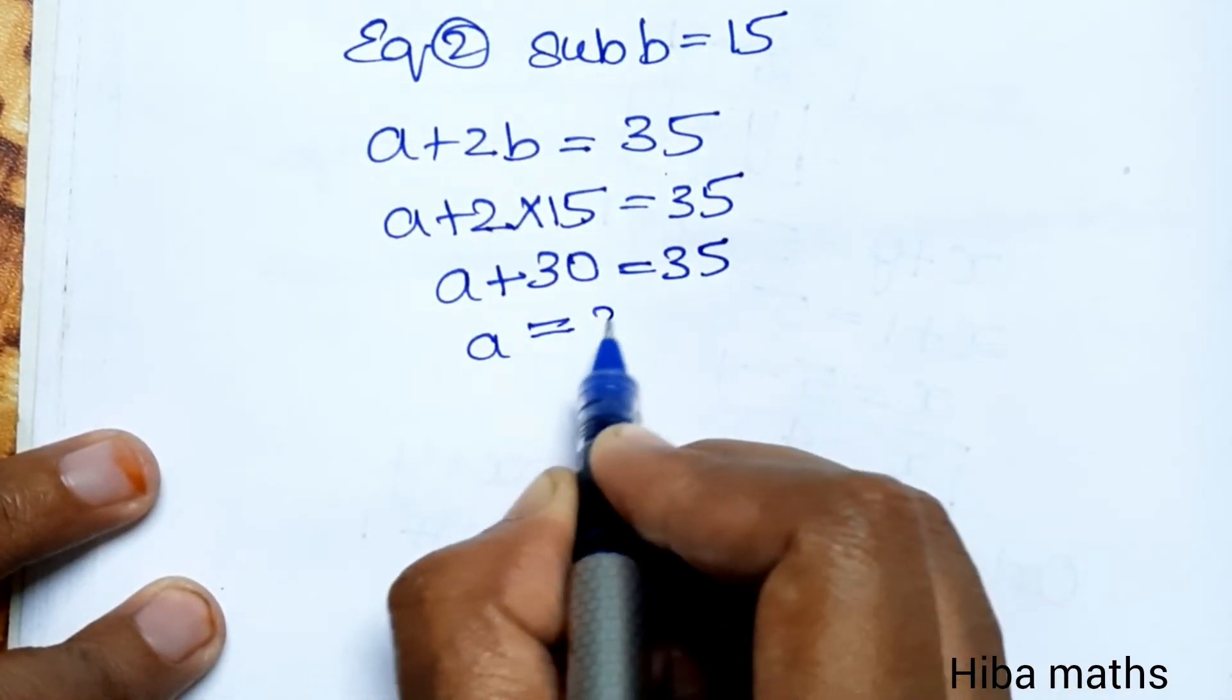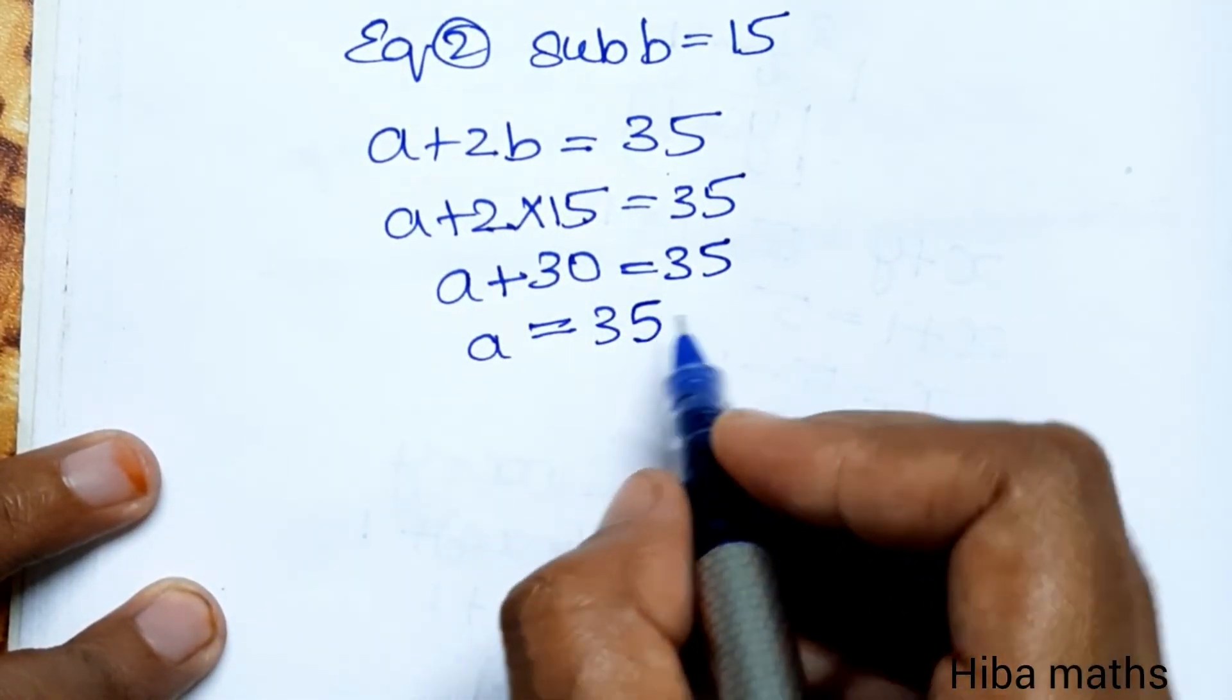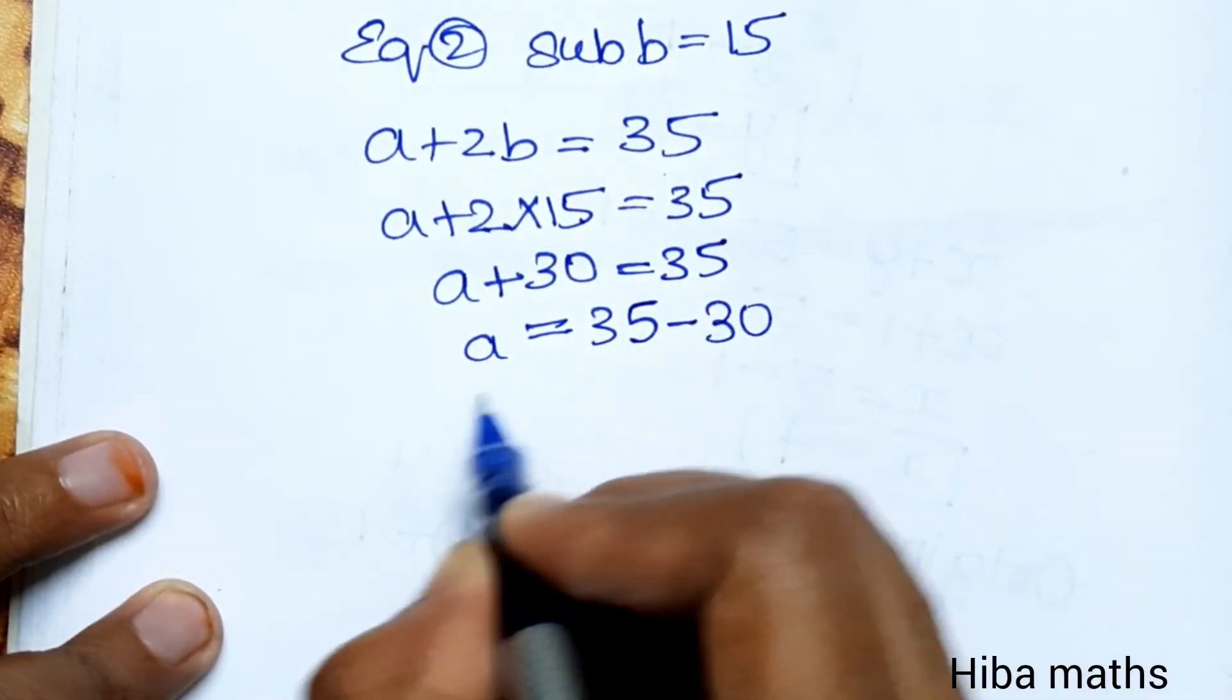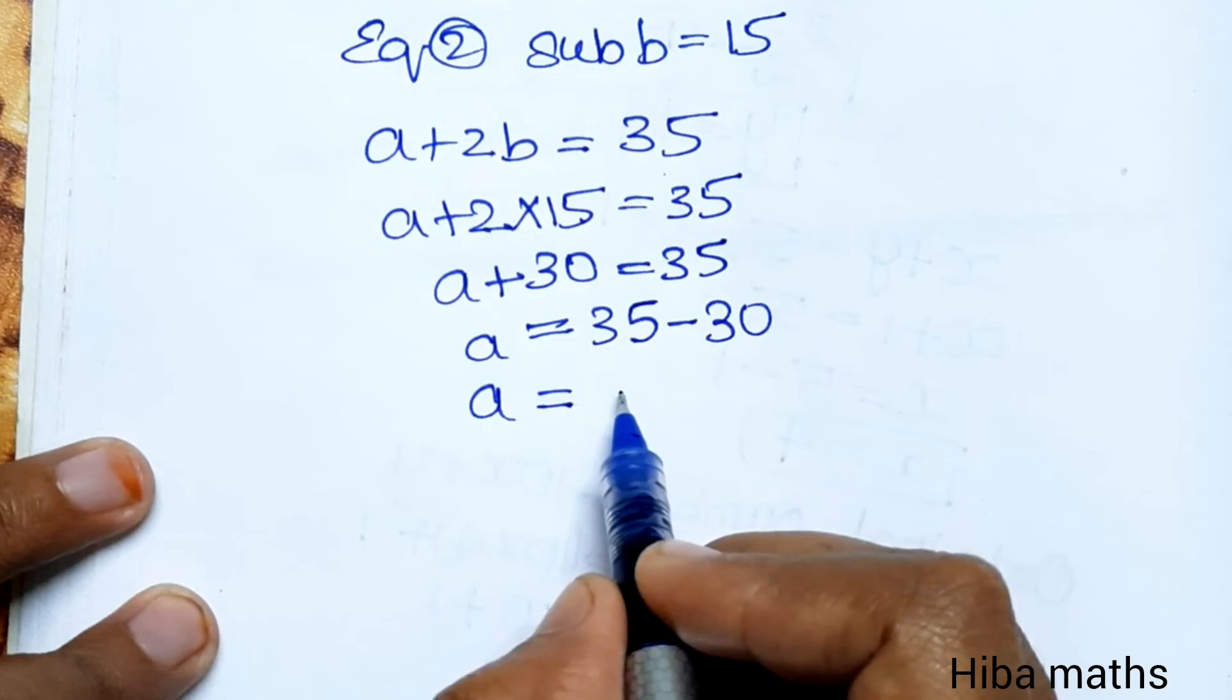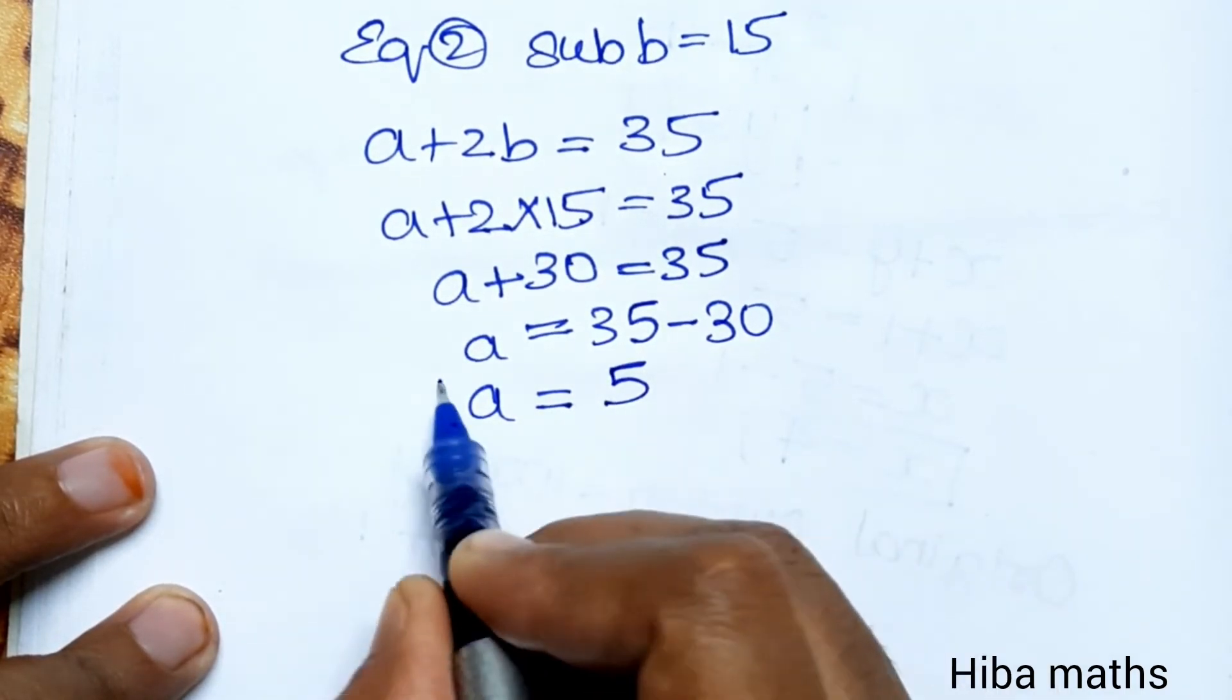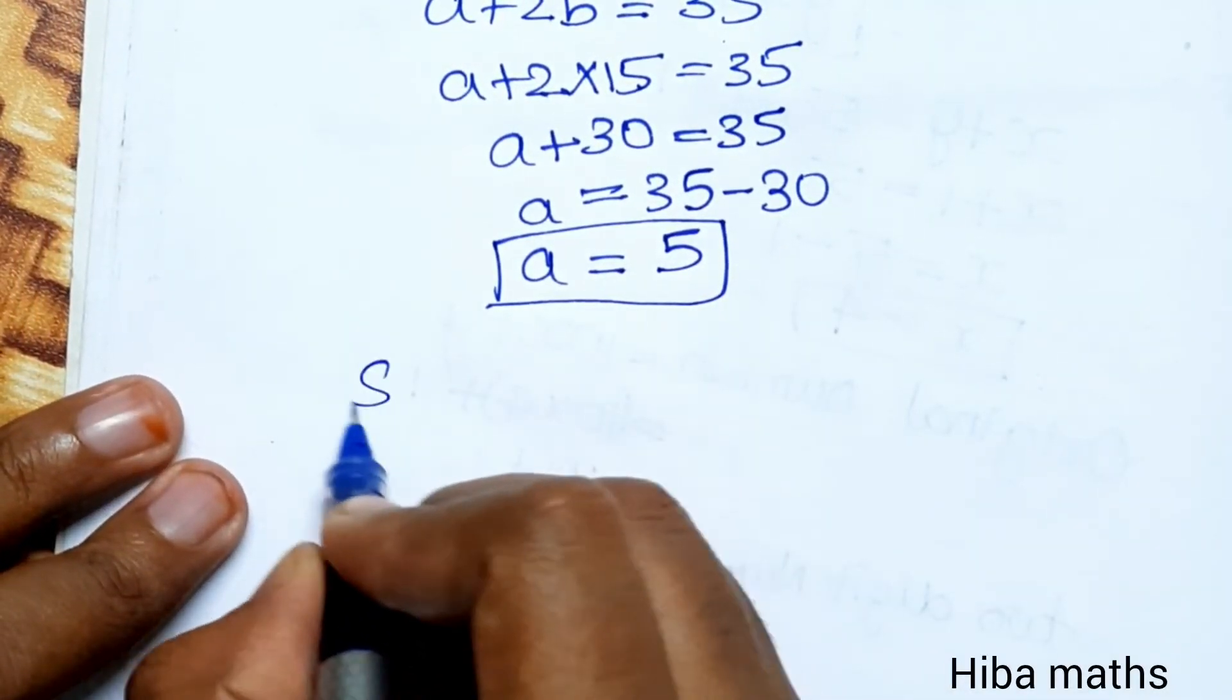a plus 30 equals 35, so a equals 35 minus 30. a equals 5. The solution is a equals 5, b equals 15.